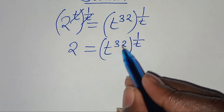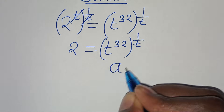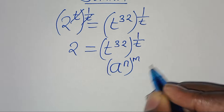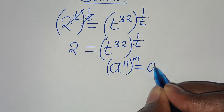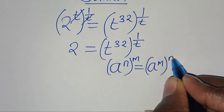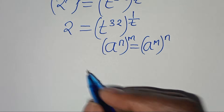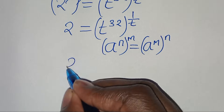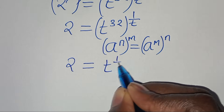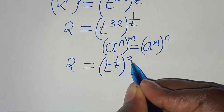Now, t to the power of 32, raised to the power of 1 over t, is in the form of a to the power of n, raised to the power of m, which we can express as a to the power of m, raised to the power of n. Applying this exponent property, we have 2 equal to t to the power of 1 over t, raised to the power of 32.